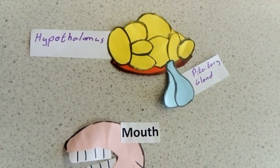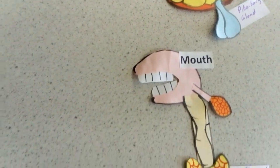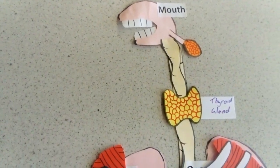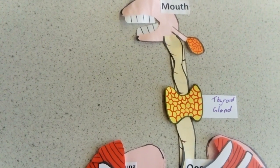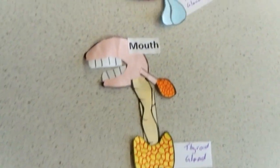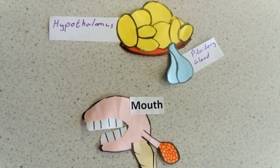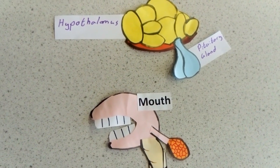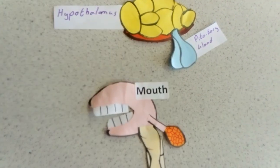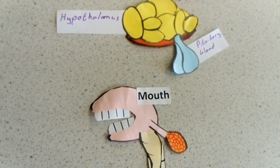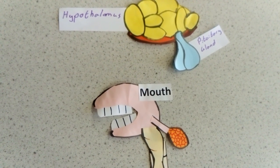The pituitary gland will then produce the hormone TSH, which will travel down the bloodstream to the thyroid gland and cause it to produce more thyroxine. That increased concentration of thyroxine will travel back up to the pituitary gland through the blood, which will negatively cause it — so stop it — producing the hormone TSH, which originally caused the production of that thyroxine. That's a very brief summary of negative feedback and the production of thyroxine.